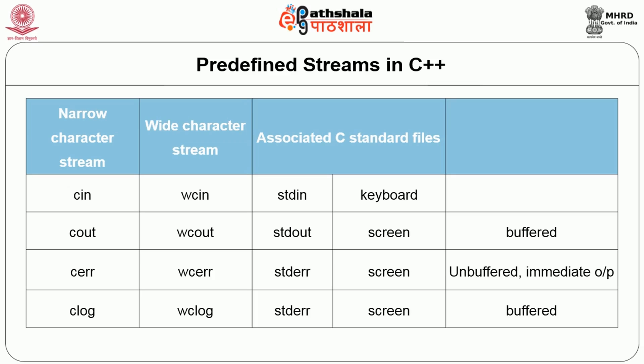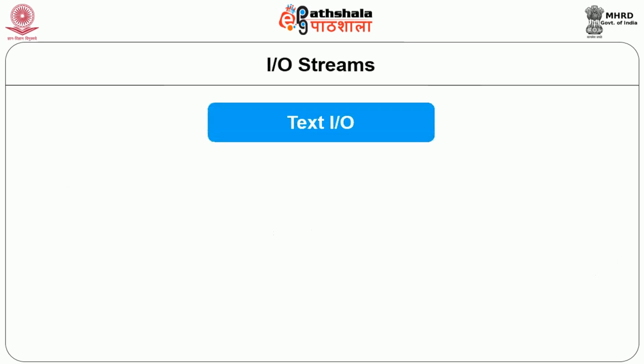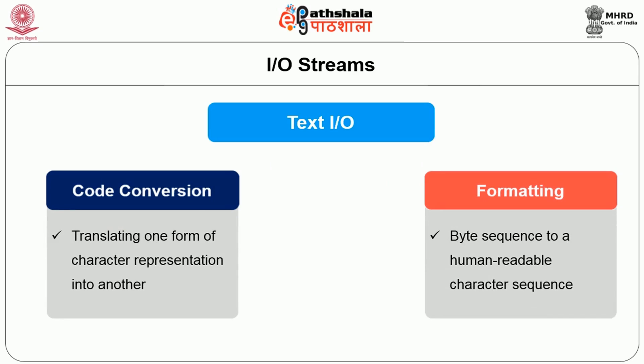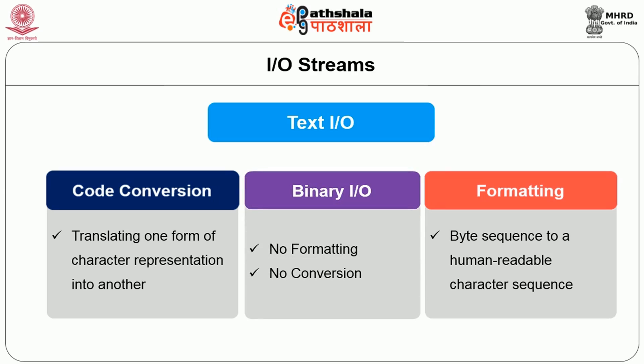cout and clog provide buffered output — whatever goes into the stream is not displayed on the screen immediately — whereas cerr uses unbuffered output, so the error is displayed on screen immediately. All these IO streams require two processes: code conversion and formatting for text processing. When binary IO is used, no formatting or conversion takes place, and therefore binary IO is usually faster.